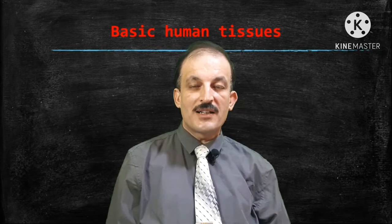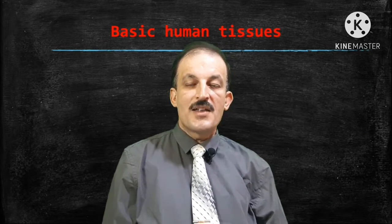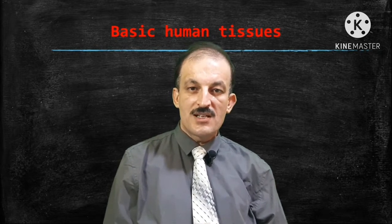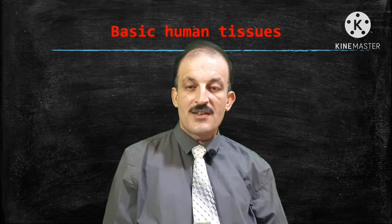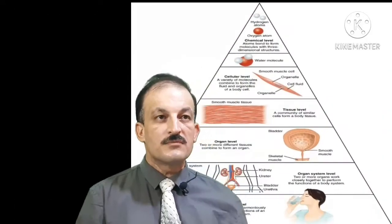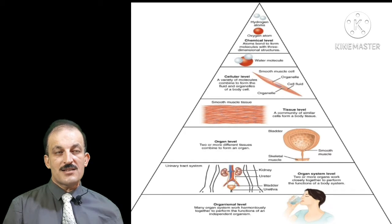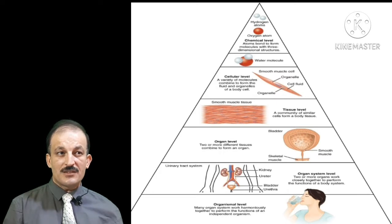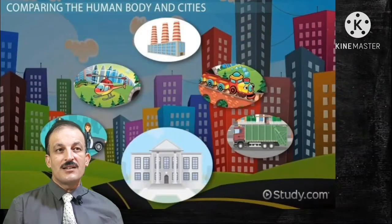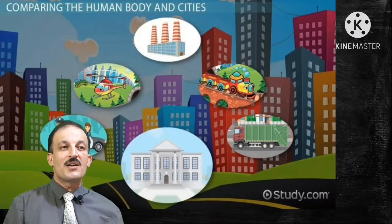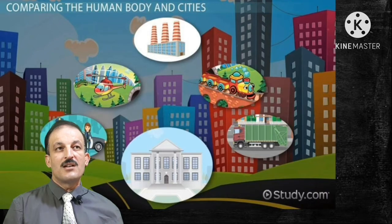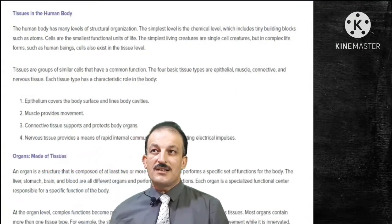Hello guys, welcome back to another video of Introduction to Anatomy. This is Part 4, which will be about basic human tissues. You will hear about levels of organization, which are not our topic today, but they include: chemical level, cellular level, tissue level, organ level, systemic level, and organismal level. Each smaller level reflects the overall physiology or function of the human being.